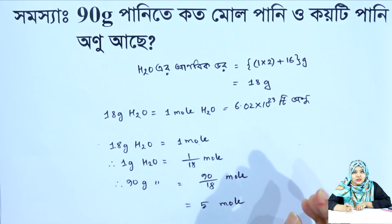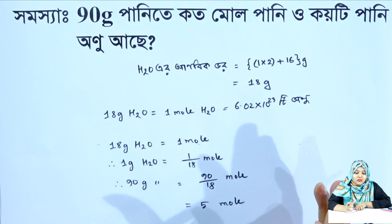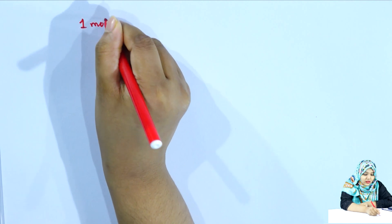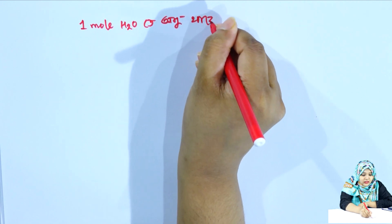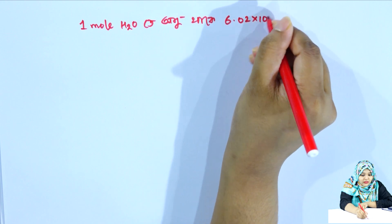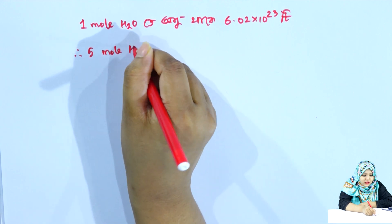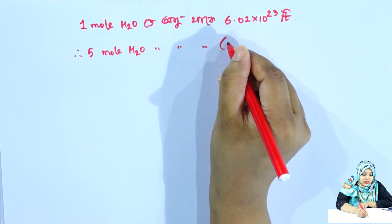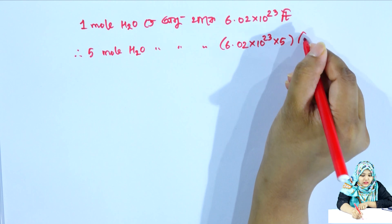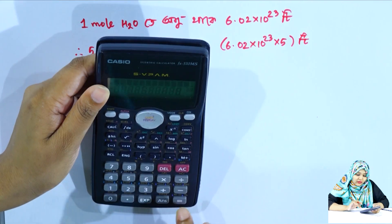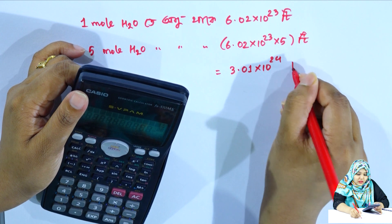5 mole of water is equal to 6.02 into 10 to the power 23 into 5, which equals 3.01 into 10 to the power 24 molecules.